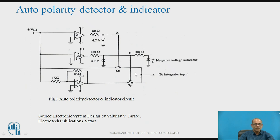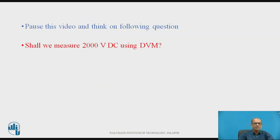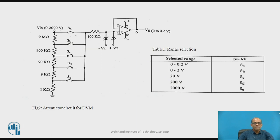This circuit detects the polarity of input by glowing the LED — if input is negative, LED is on. Now, can we measure 2000V DC using a DVM? Yes, 2000V DC can be measured, but it cannot be connected directly to the integrator input because the op-amp can only accept input voltage up to its rated input. Therefore, if you want to measure up to 2000V (range 0 to 2000V), that voltage must be attenuated using an attenuator circuit.